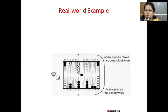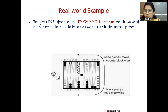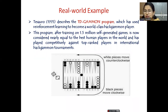A real-world example is TD-Gammon — a backgammon game program. This program, using reinforcement learning, achieved the accuracy of a world-class player after playing 1.5 million self-generated games. It is now considered nearly equal to the best human player in the world.